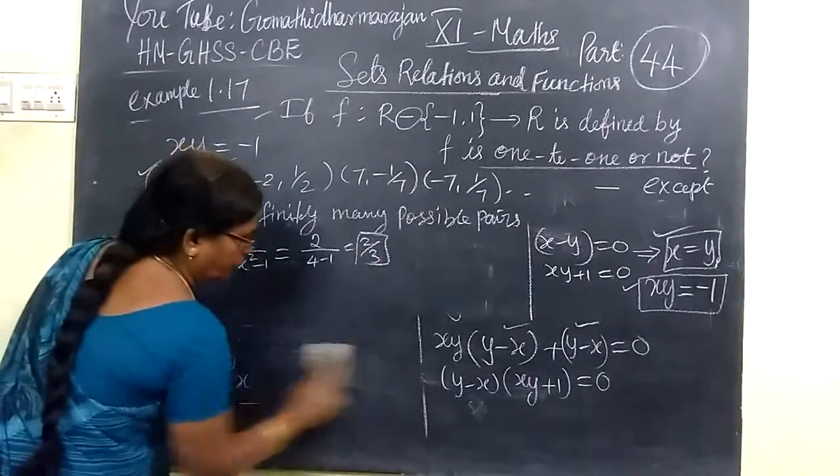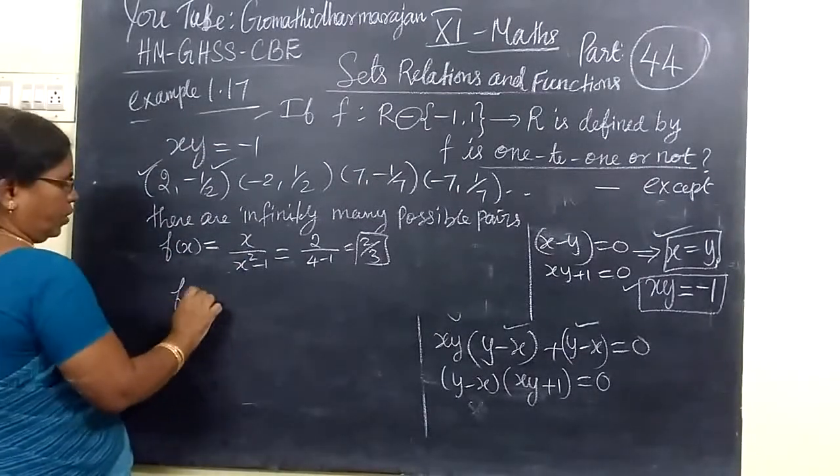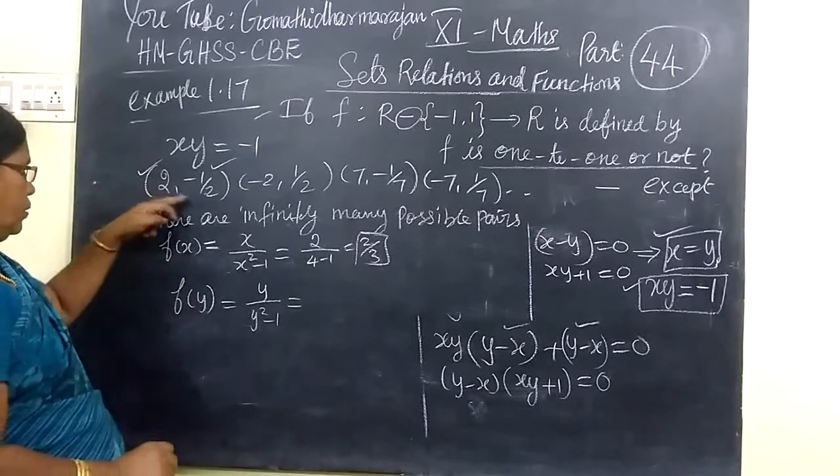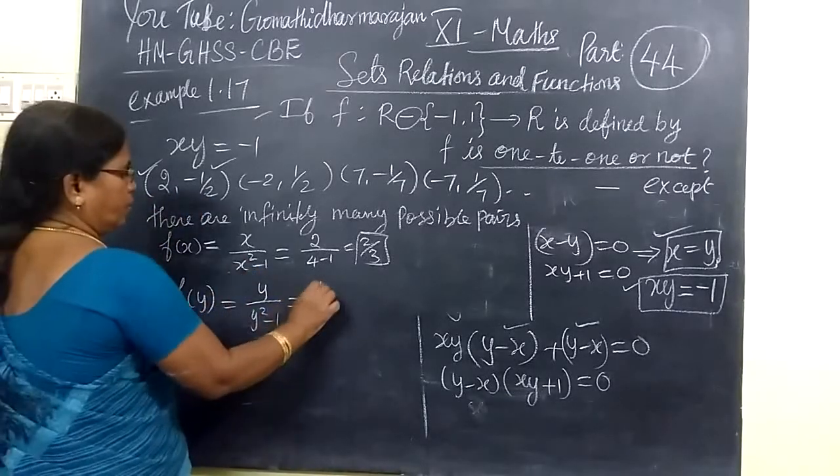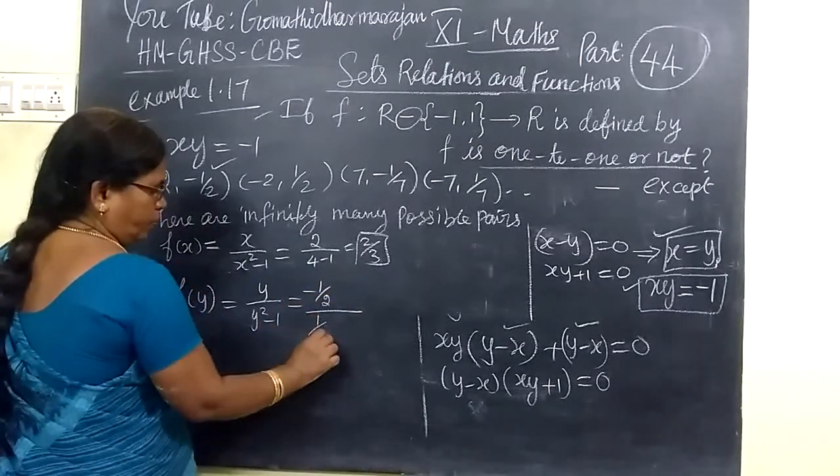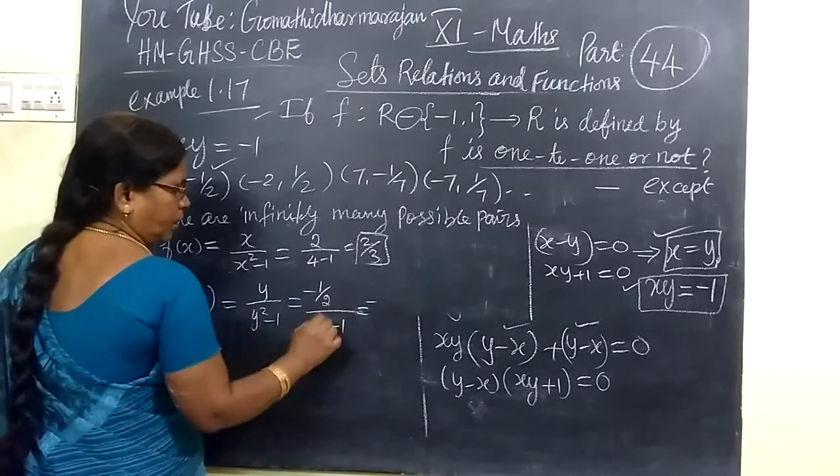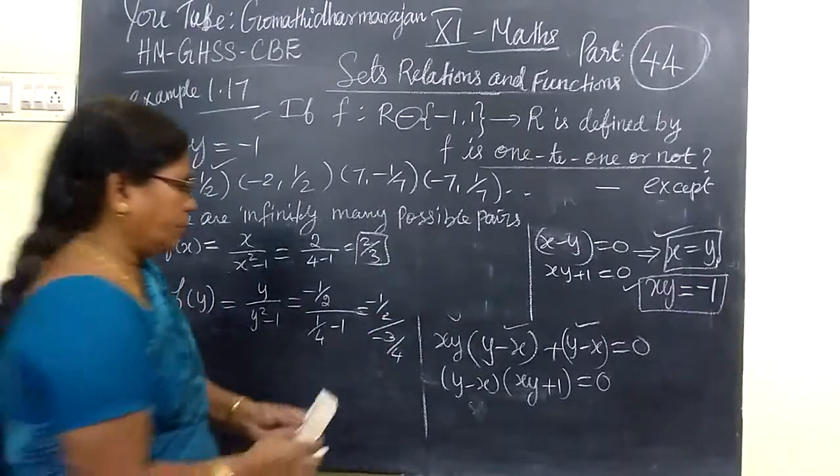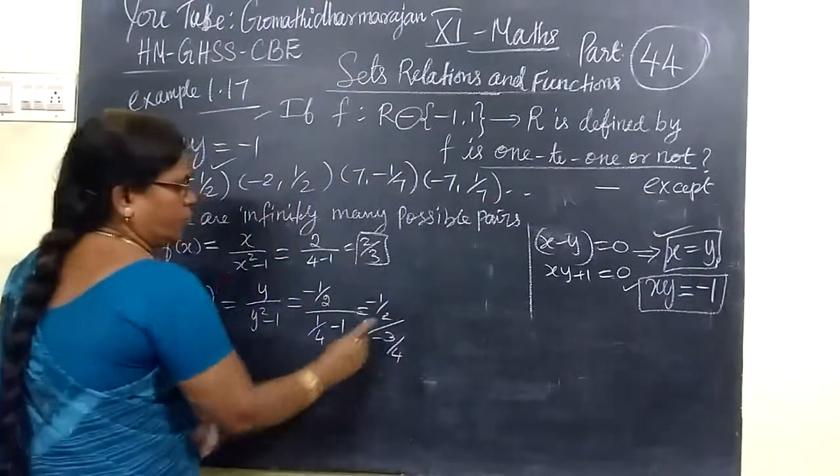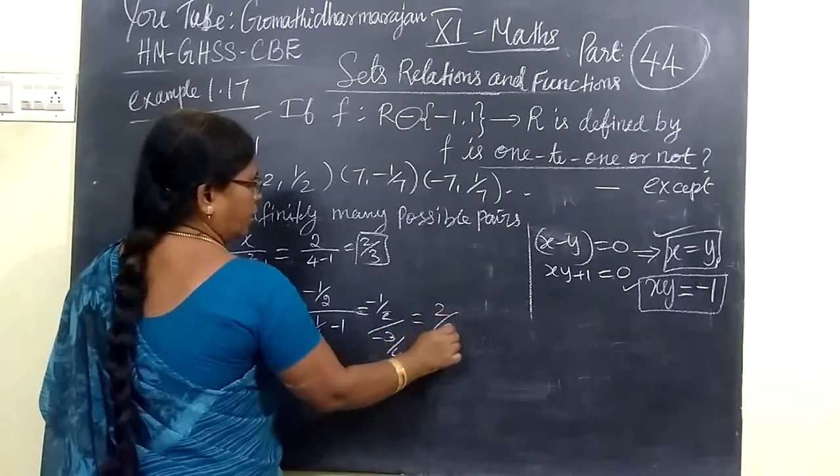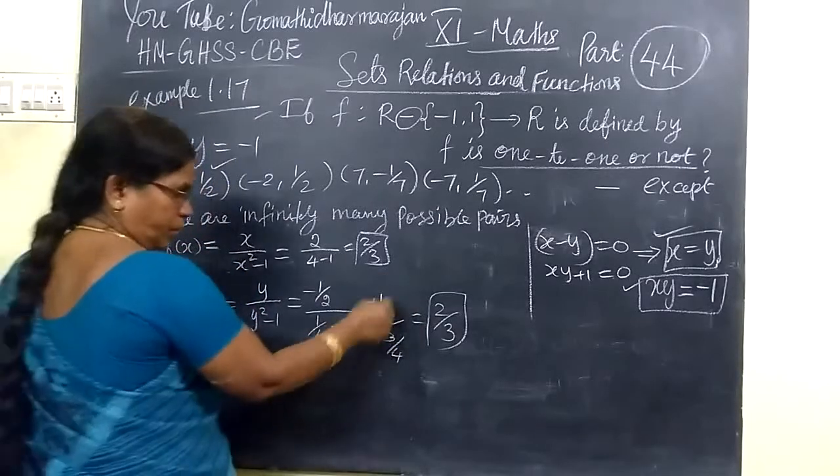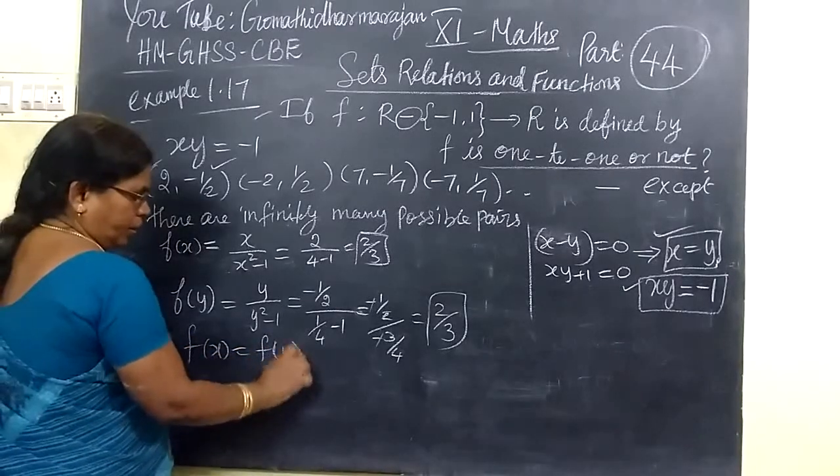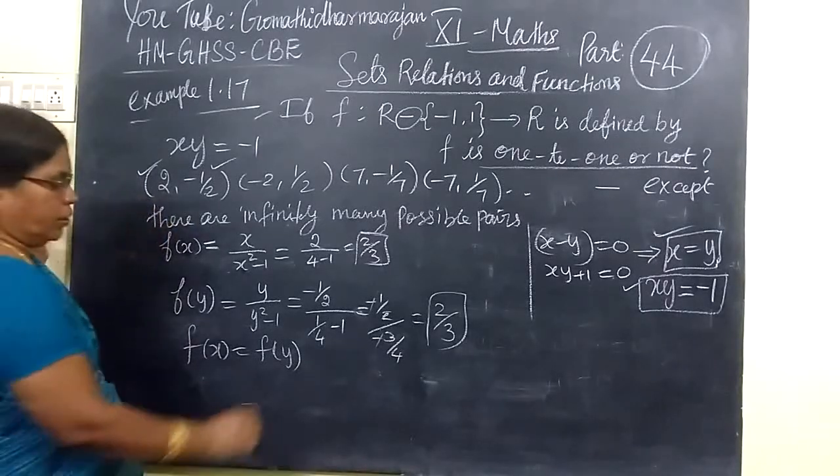Now we take f(y). f(y) equals y/(y²-1). For y = -1/2, this equals (-1/2)/(1/4-1) = (-1/2)/(-3/4). If you write in reciprocal form, you are getting 2/3.